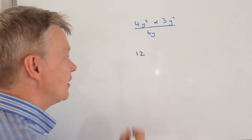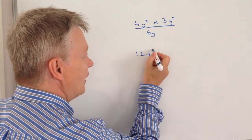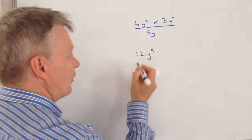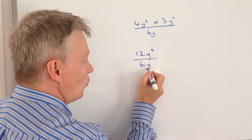Well, using the laws of indices, that's going to be y to the 9, because we add these indices together. And then I've got that divided by 6y.